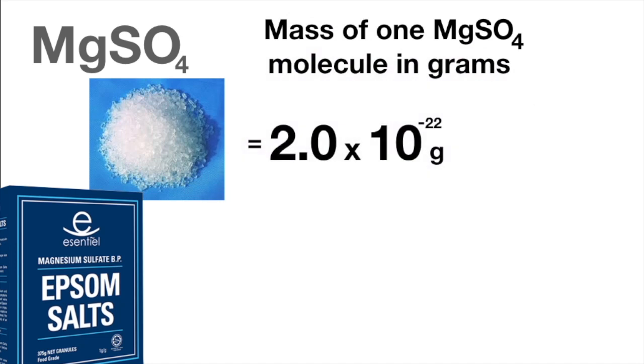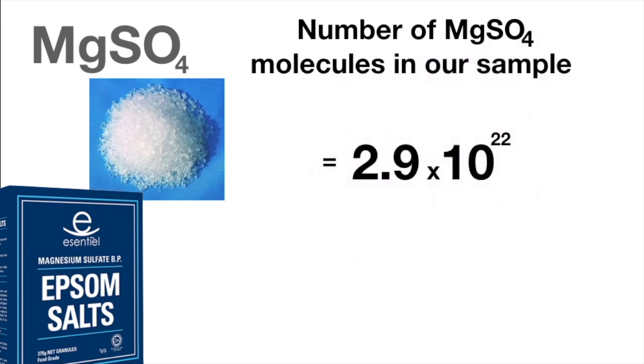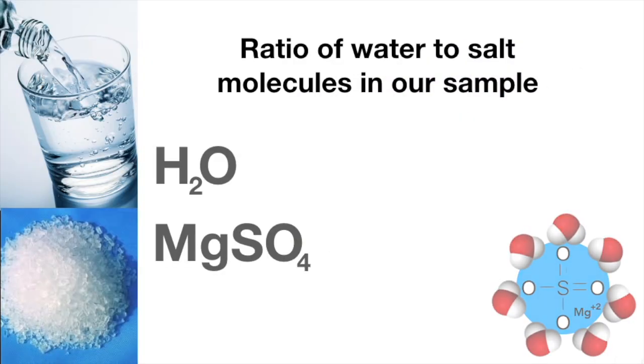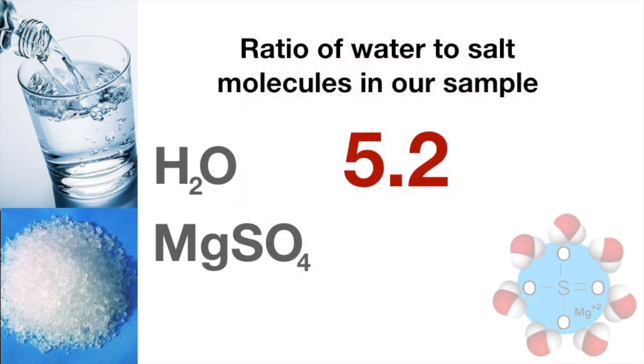Now if we assume that store-bought Epsom salt is pure, by which I mean reagent grade magnesium sulfate, then dividing that into the mass of our dried sample would give us the number of salt molecules. That would be this. So then, to test that assumption, we divide the number of water molecules by the number of salt molecules, and we get 5.2 water molecules per salt molecule.